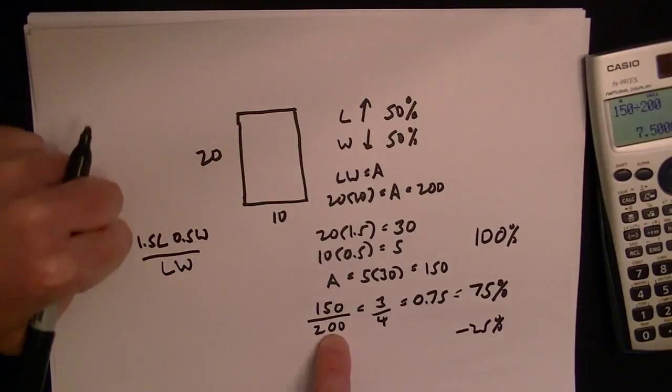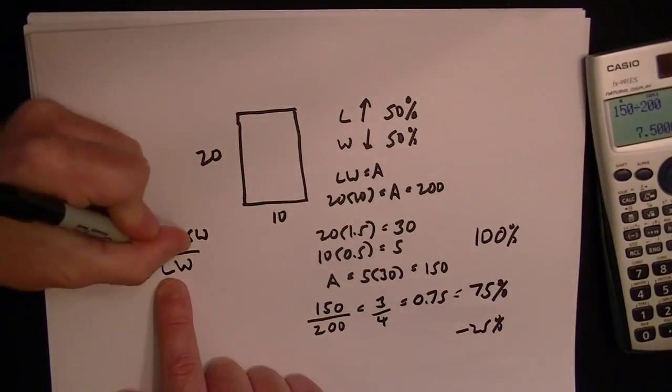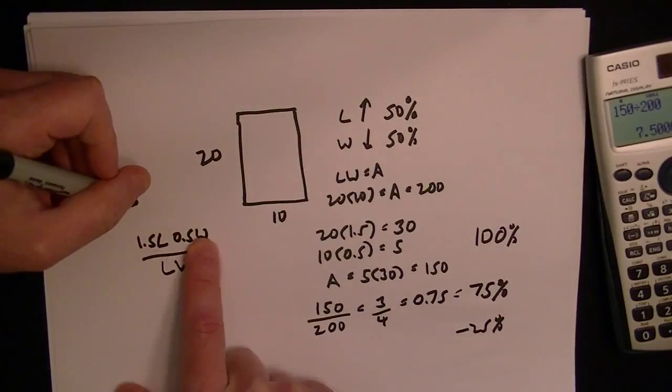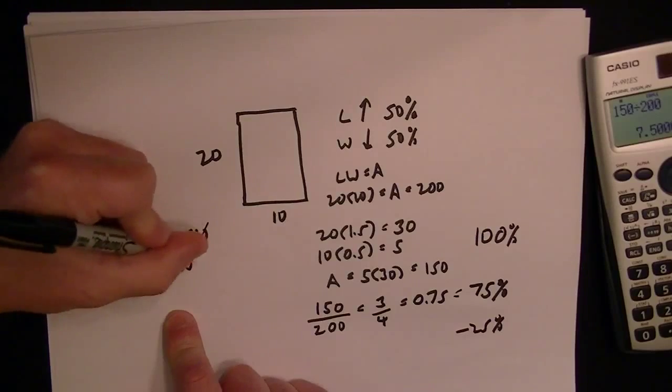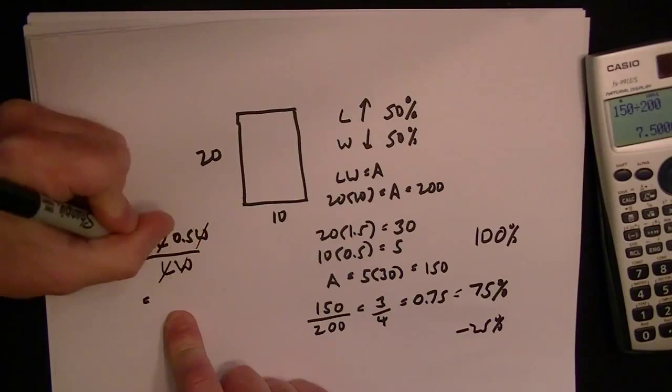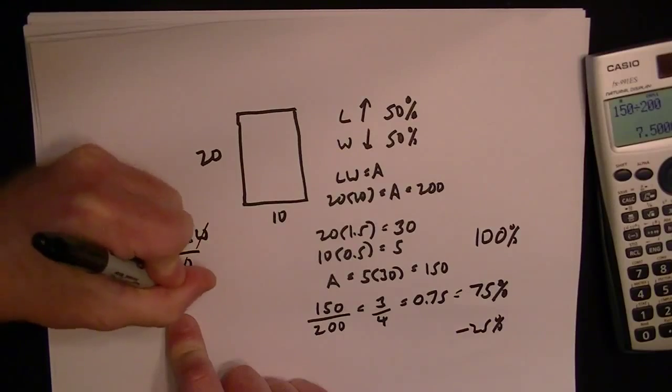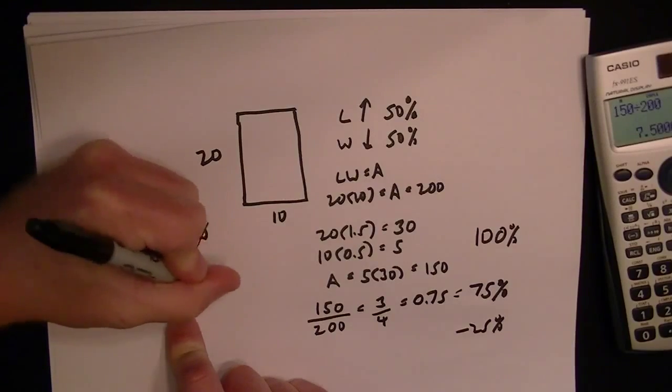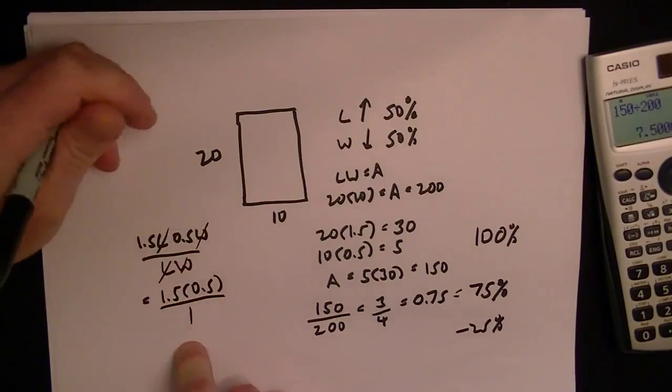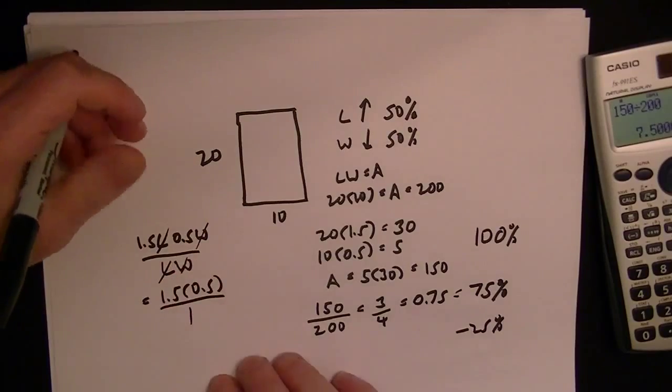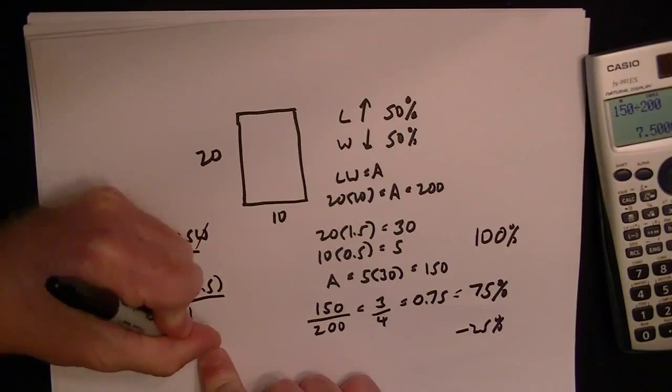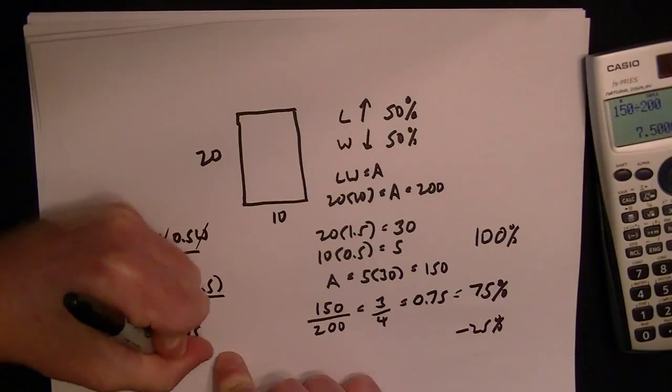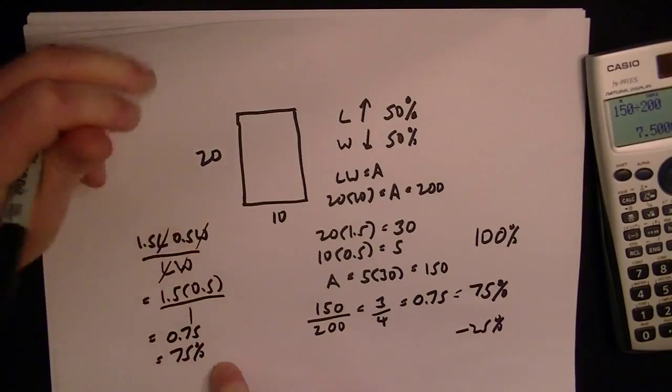It's the new length and width times the old length and width. The L and the W cancel. So then you just get 1.5 times 0.5 over 1 because the L and W cancelled.